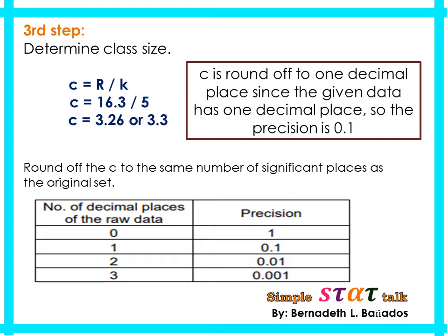In this case, the given data has one decimal place. By referring to the precision table, since the data set has one decimal place, the precision must be 0.1. That is why we round the class size to one decimal place — our class size must be 3.3, not the whole number 3.